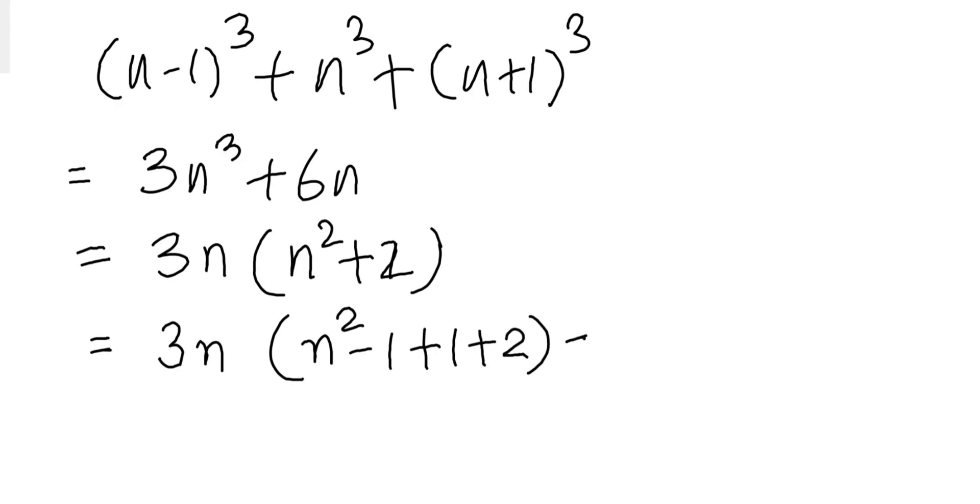Now we can use the n² - 1 formula. Do you see here? What we can do is we can use a² - b² formula here. And then multiplying we'll get 3n into (n-1) into (n+1) plus 3 into 3n.